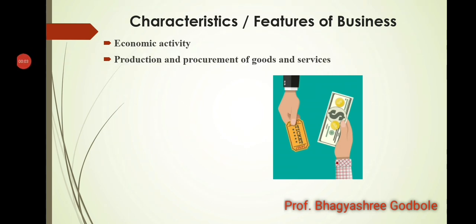The next characteristic is production and procurement of goods and services. I may either be producing goods and selling them to final consumers, or I may be purchasing goods from the manufacturer and selling them to final consumers. For example, if I am in the manufacturing of leather handbags — I have my own factory where I produce handbags and sell them to consumers — that is production. Alternatively, if I purchase handbags from a manufacturer and sell them to consumers, that is procurement.